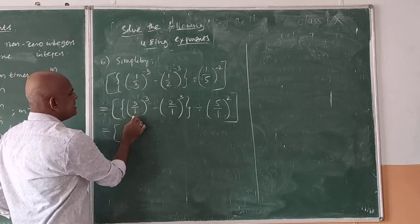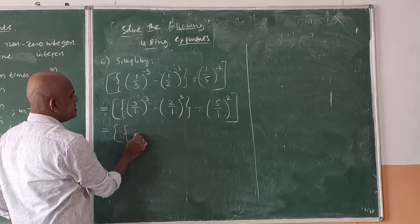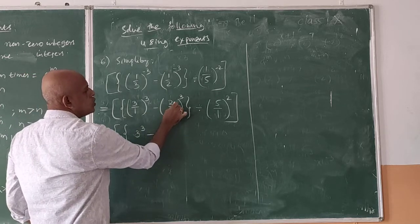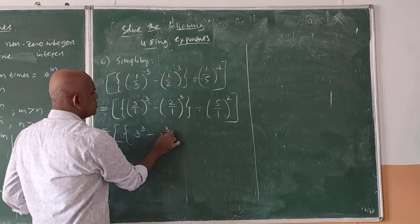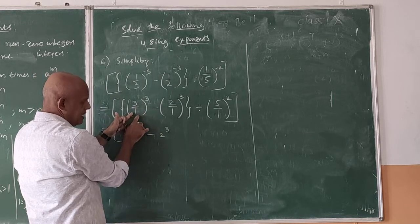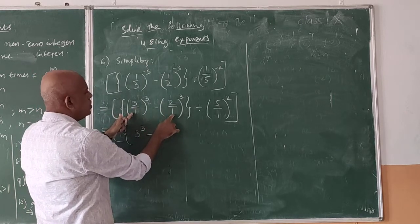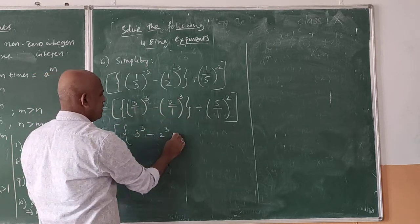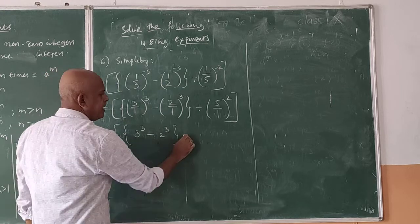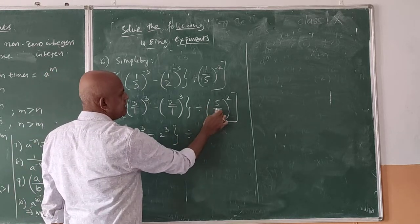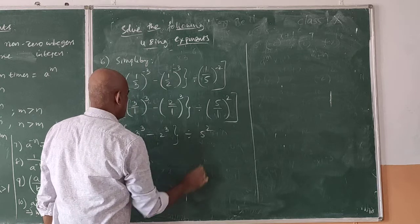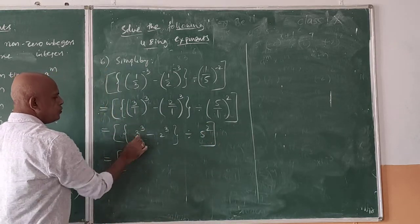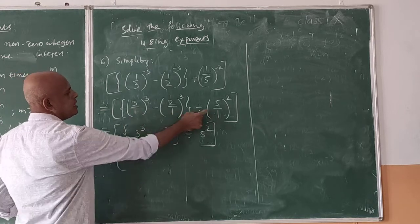Similarly, 1 by 5 to the power of minus 2 becomes 5 to the power of 2. So now we have 3 to the power of 3 minus 2 to the power of 3, in the curly bracket, divided by 5 squared. Now opening the curly bracket: 3 cubed is 27, 2 cubed is 8, so 27 minus 8 equals 19.